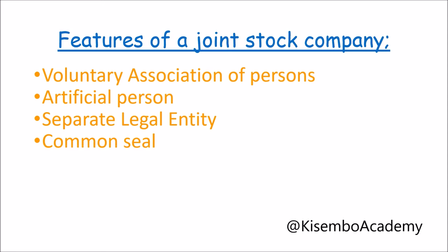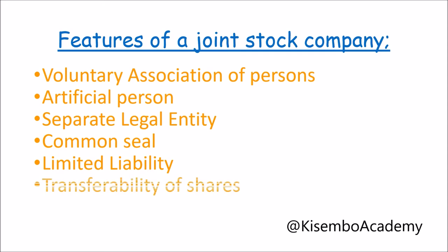Then there is limited liability. Members of the company are only liable to the face value of the shares bought or the amount guaranteed or subscribed. In case the company fails to pay its debts, the personal property of the shareholders is not attachable to recover the company's dues. There is also transferability of shares. For a joint stock company, ownership is in the form of shares. For a private company, shares are owned by specific private individuals. For a public company, shares can easily be bought and sold by the general public at the stock exchange market.